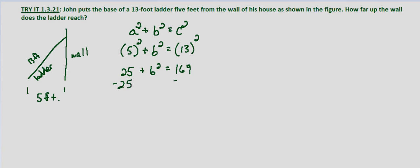Subtract 25 from both sides, and we get b squared equals 144. Take the square root of both sides, and we get b equals 12 feet.